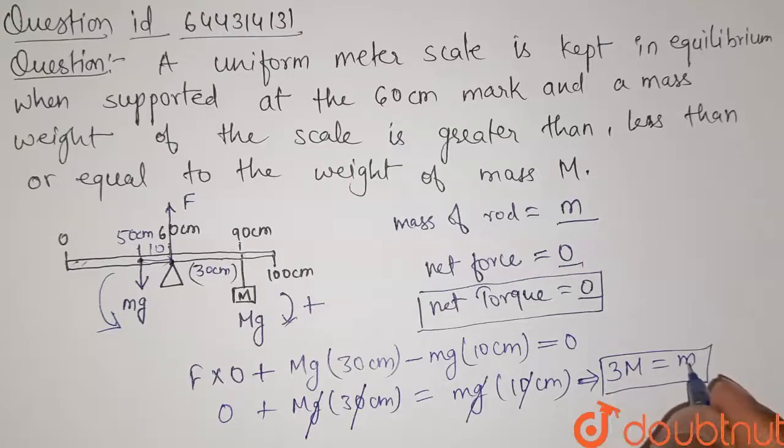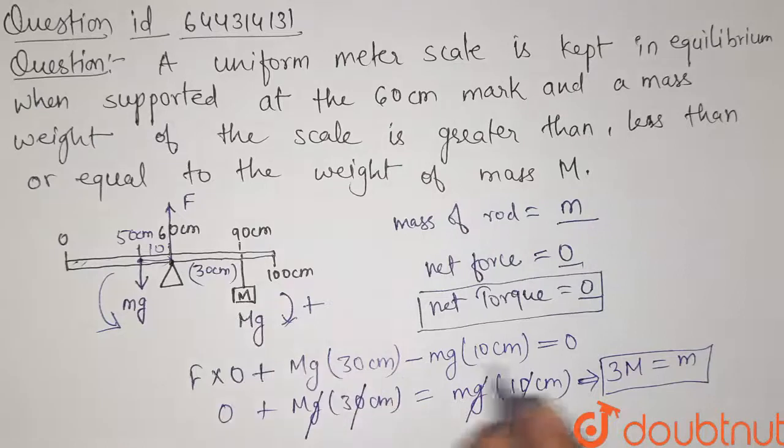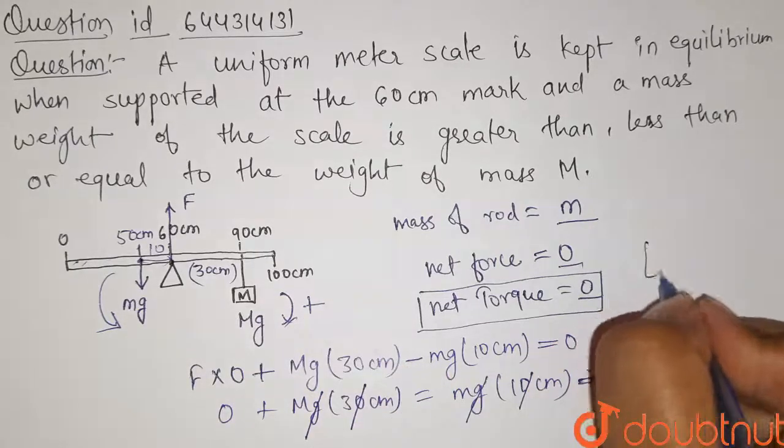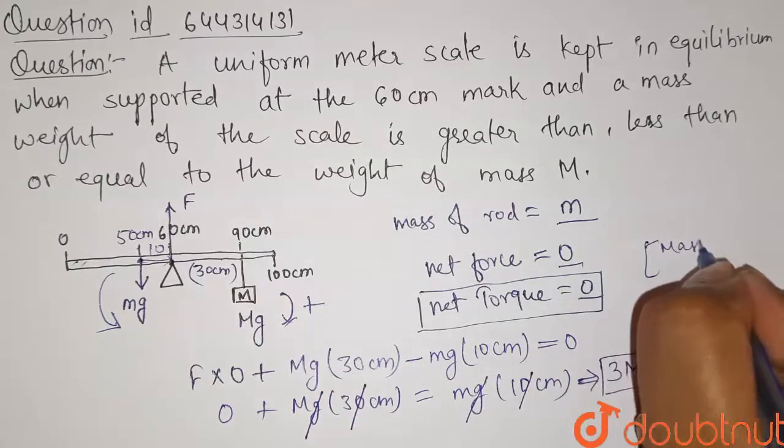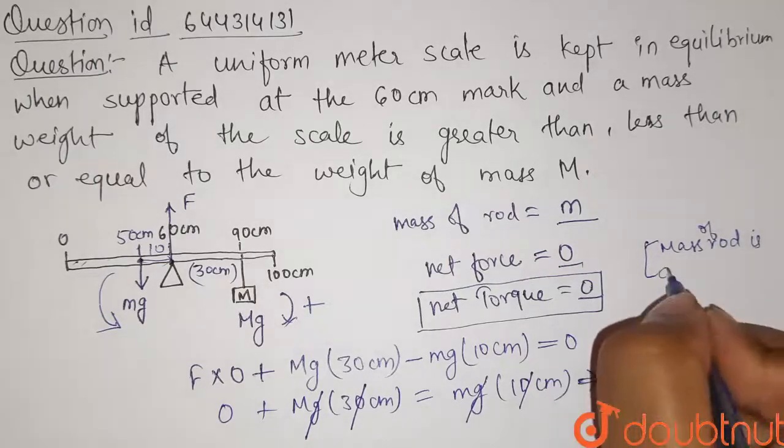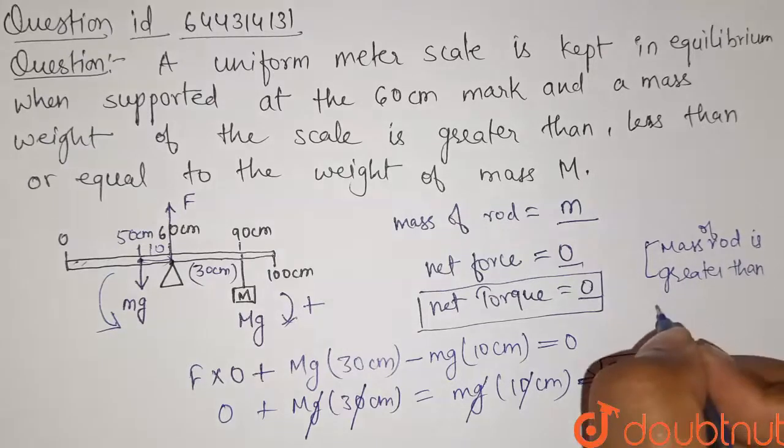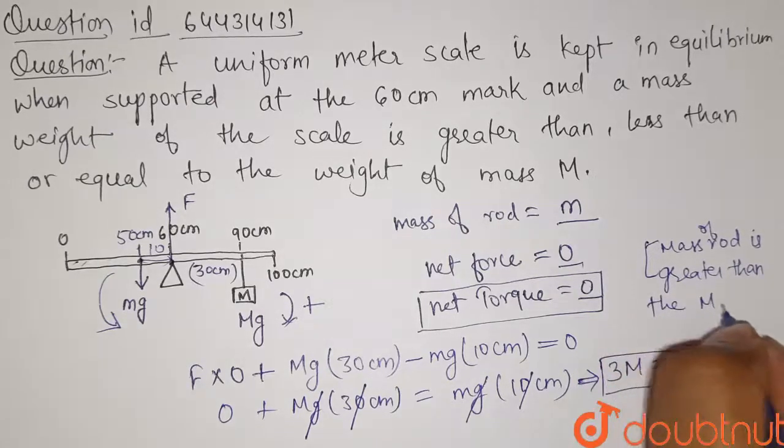And small m is the mass of rod. So we can clearly see here that the mass of rod is three times the mass of this block M. So from this we can say that mass of rod is greater than the given mass M.